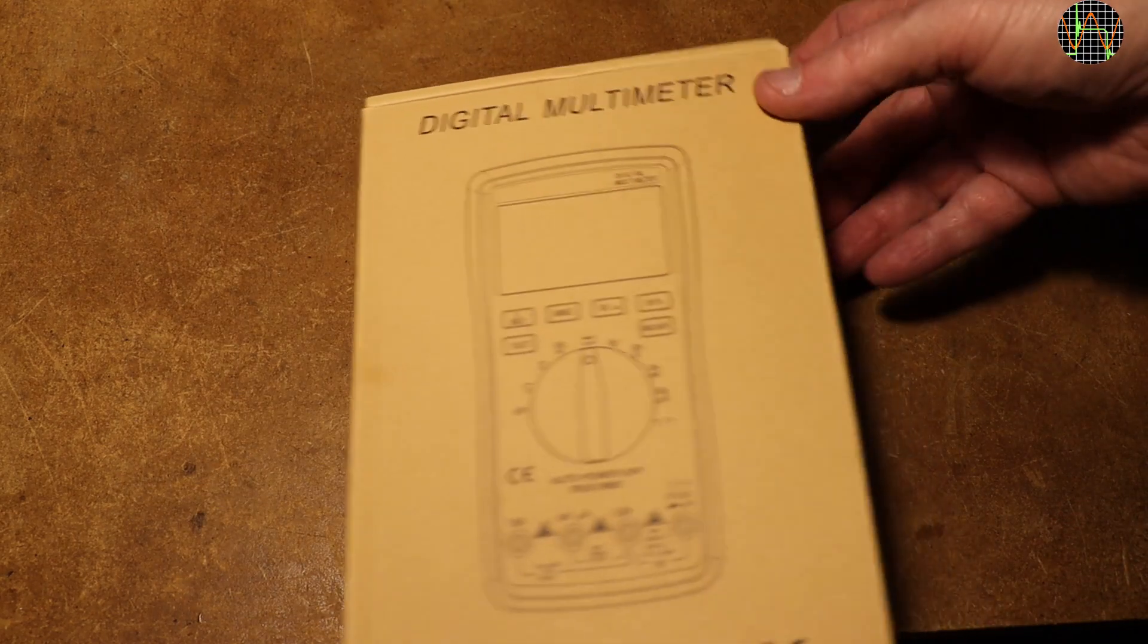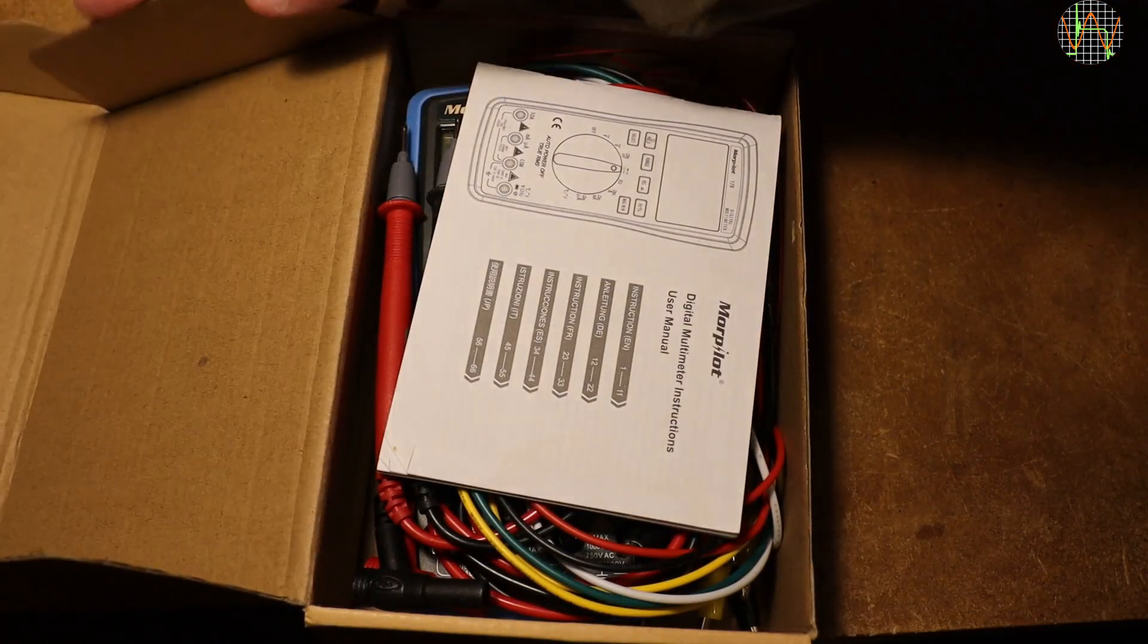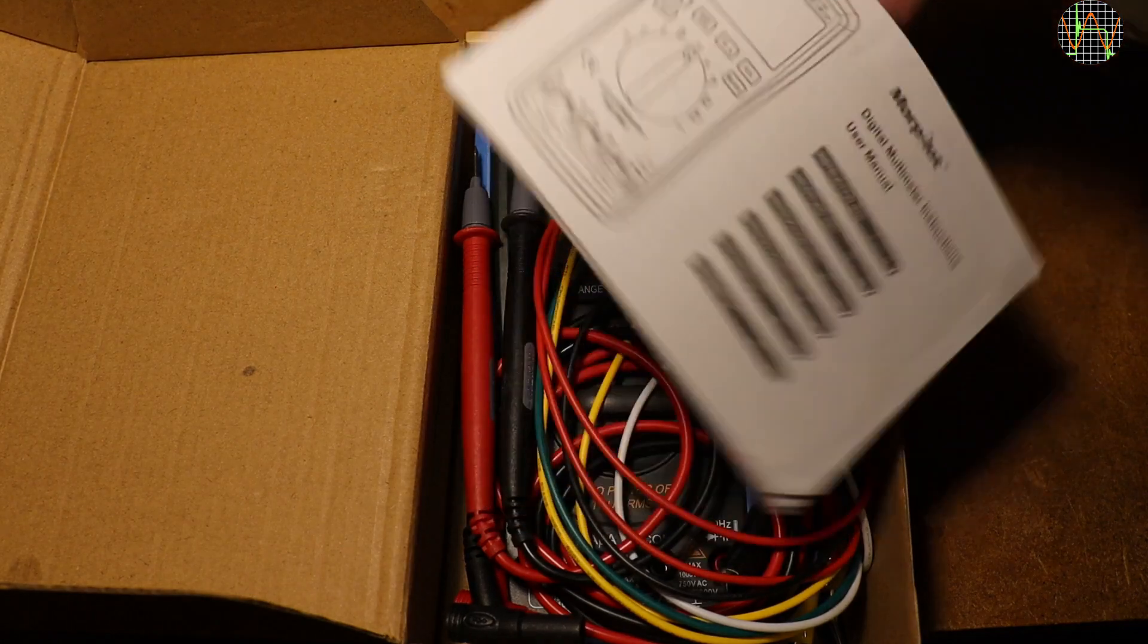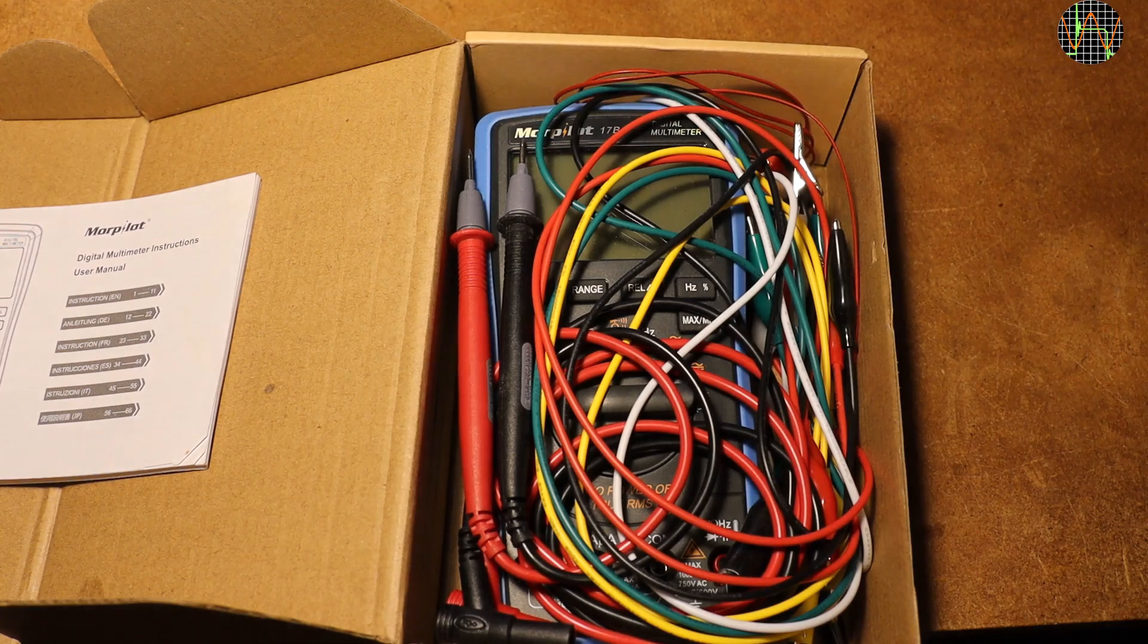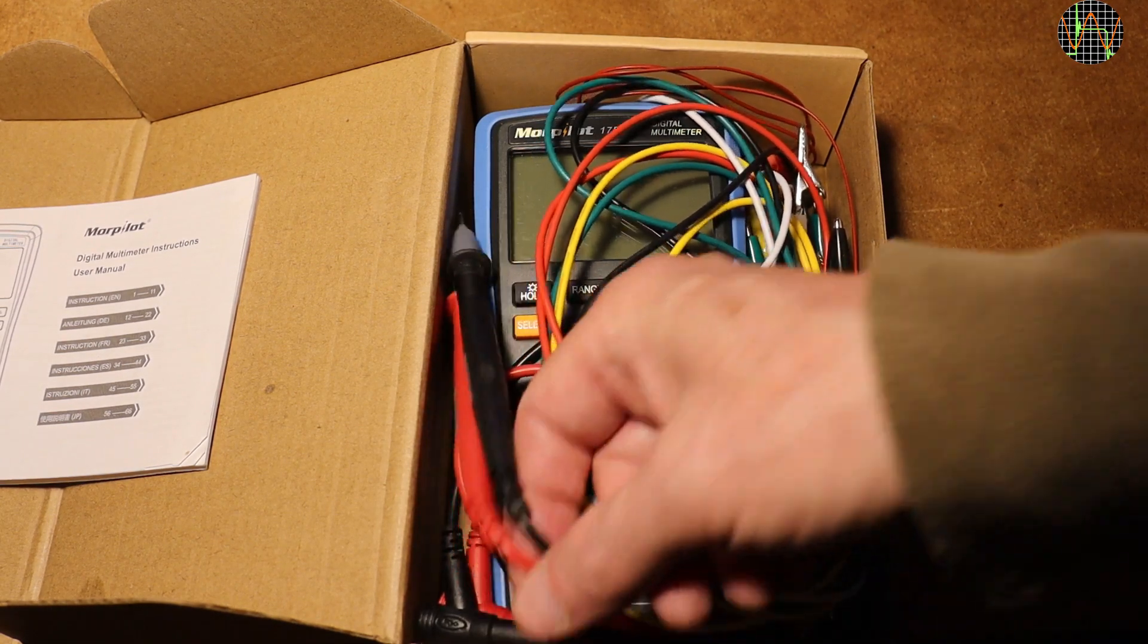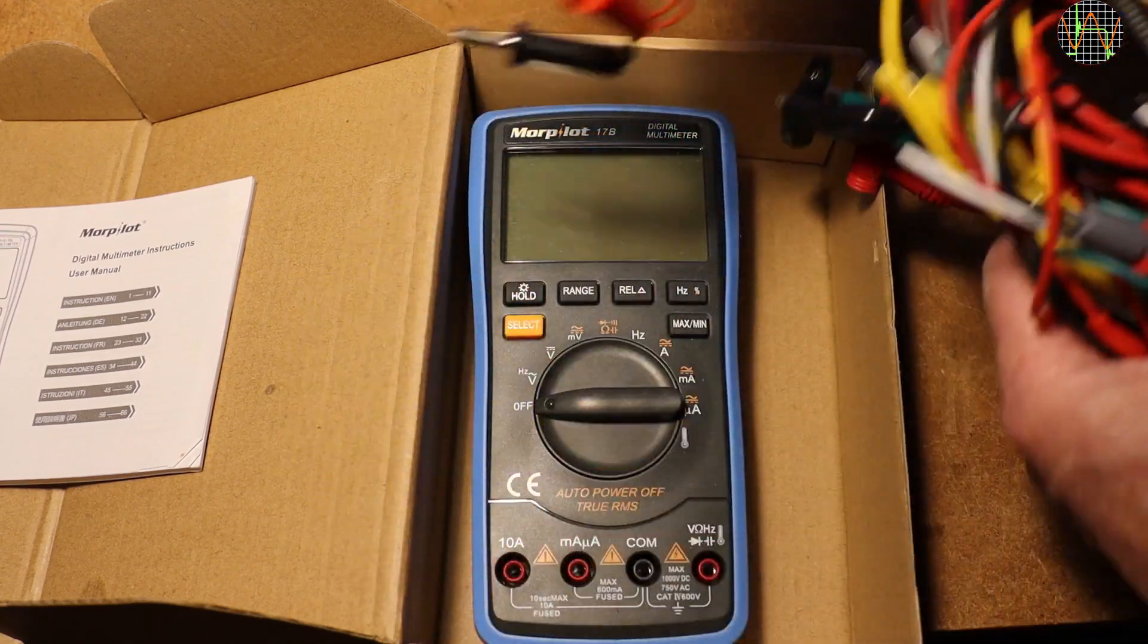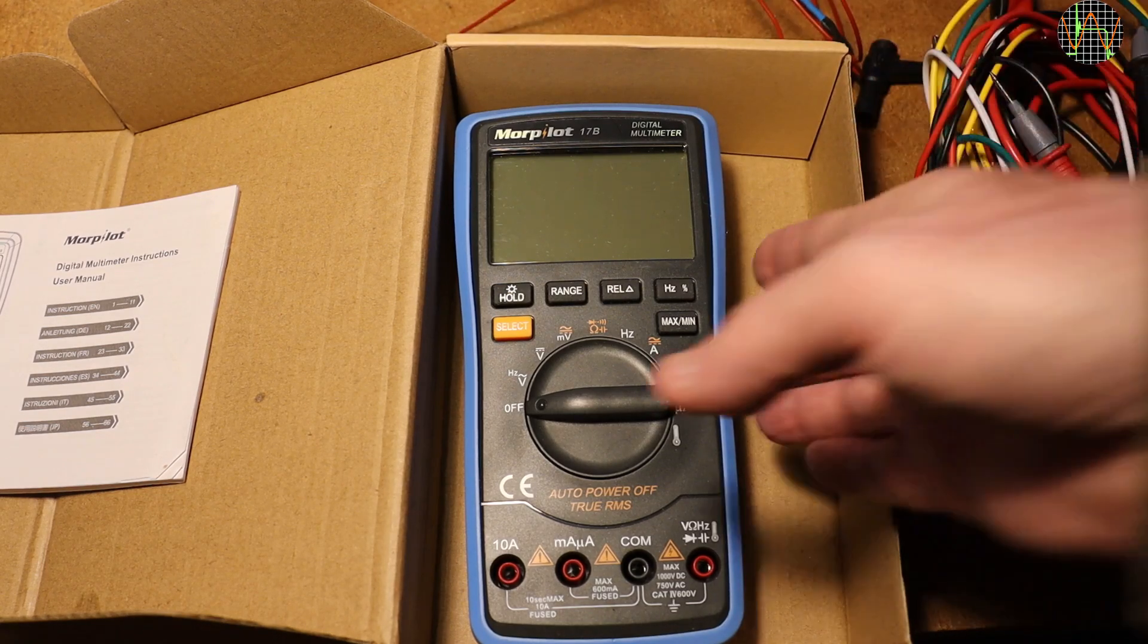The first impression is that the box is significantly larger. We have an instruction manual and quite a mess of cables, of which two are standard probes and the rest are a whole bunch of test cables with alligator clips and a K-type temperature probe and the meter itself. No holster or carrying case.